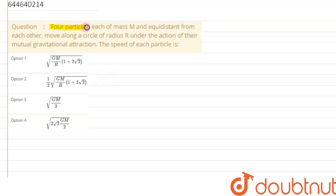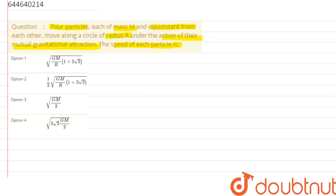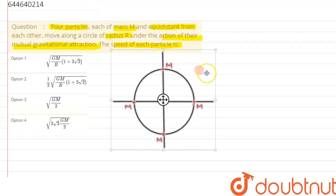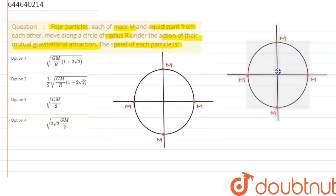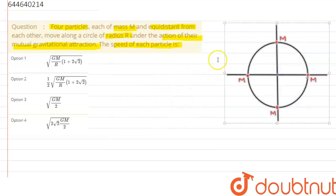We are given a question which says there are four particles each of mass M, equidistant from each other, moving along a circle of radius R under the action of their mutual gravitational attraction. We need to find the speed of each particle. Let's first visualize the given situation — we have four masses which are equidistant from each other and moving in a circular path.